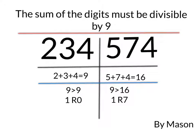So that means 234, you add all those numbers together, that equals 9. 9 goes into 9 one time with 0 remainder, so that means that number is divisible by 9.